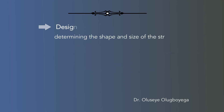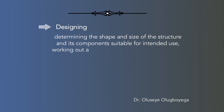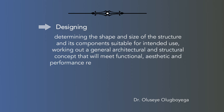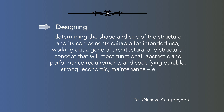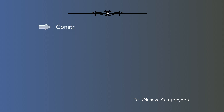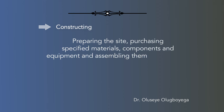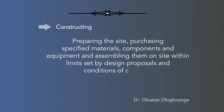Designing: determining the shape and size of the structure and its components suitable for intended use, working out a general architectural and structural concept that will meet functional, aesthetic and performance requirements, and specifying durable, strong, economical and maintenance-effective materials of construction. Constructing: preparing the site, purchasing specified materials, components and equipment, and assembling them on site within limits set by design proposals and conditions of contract.